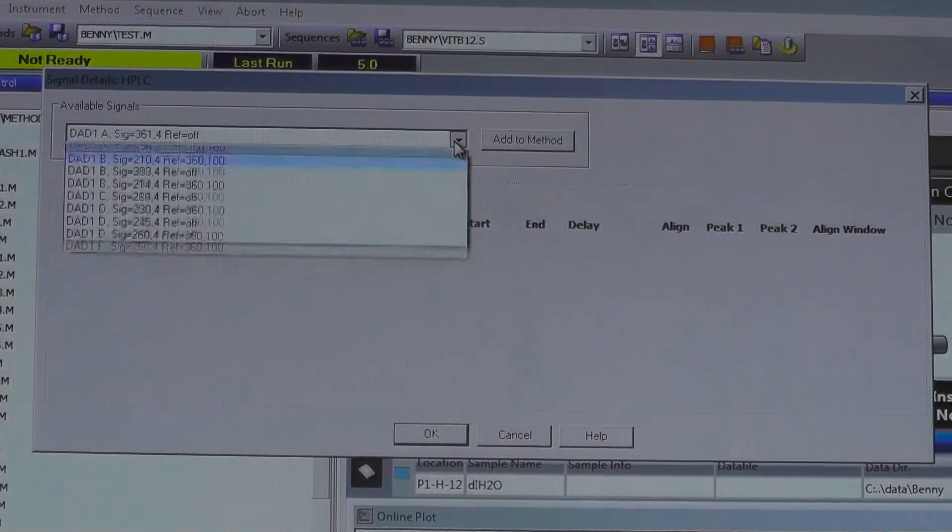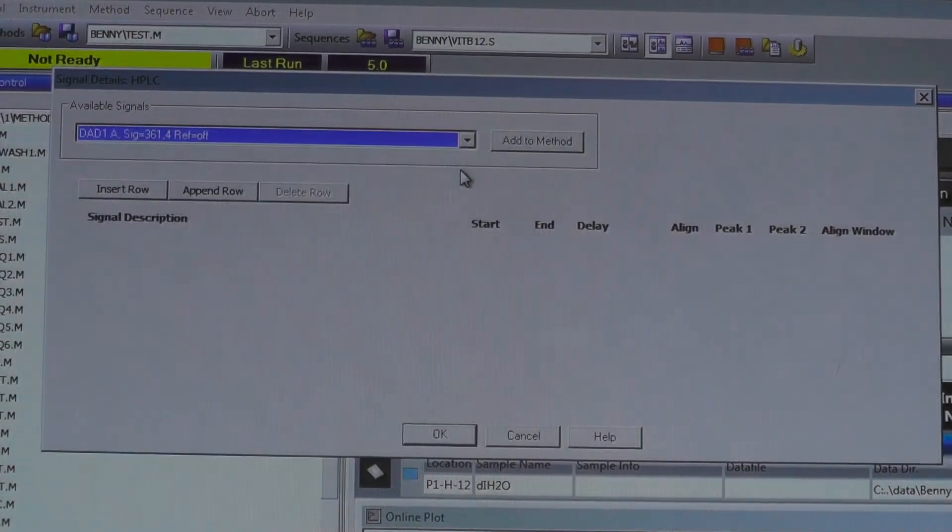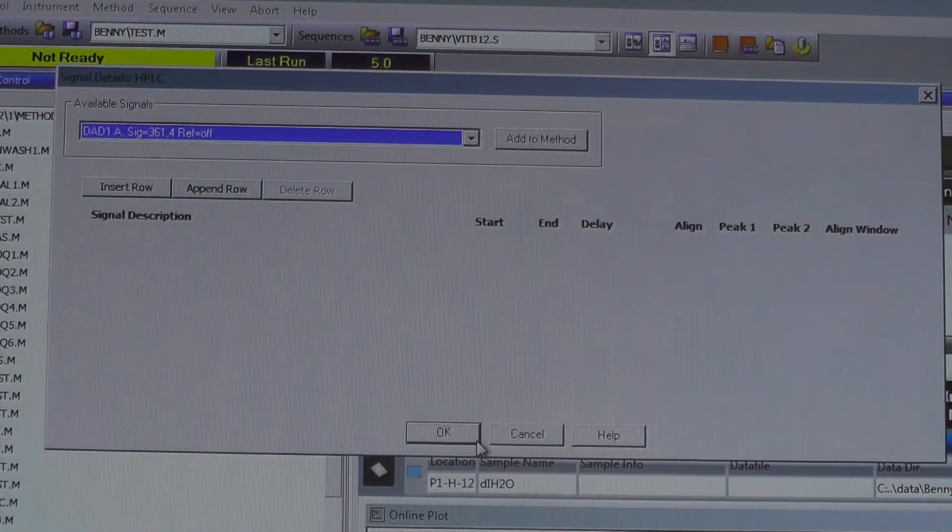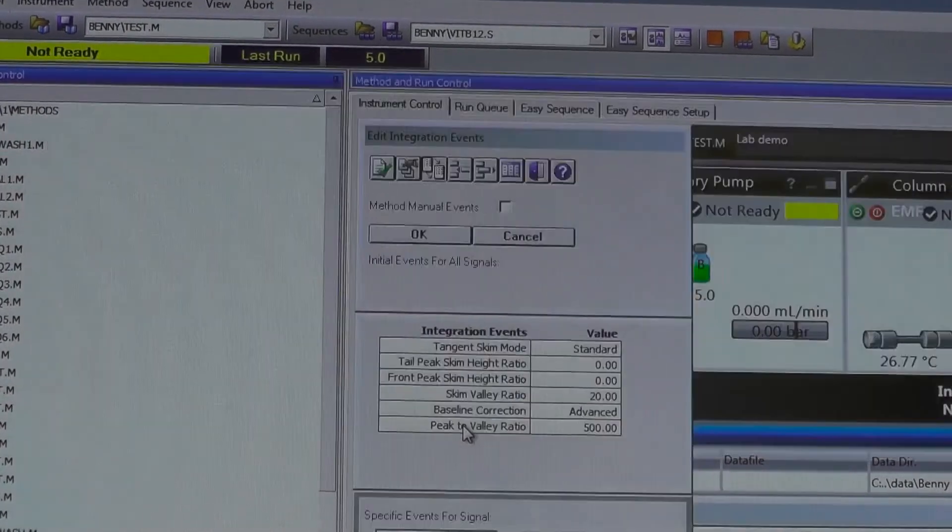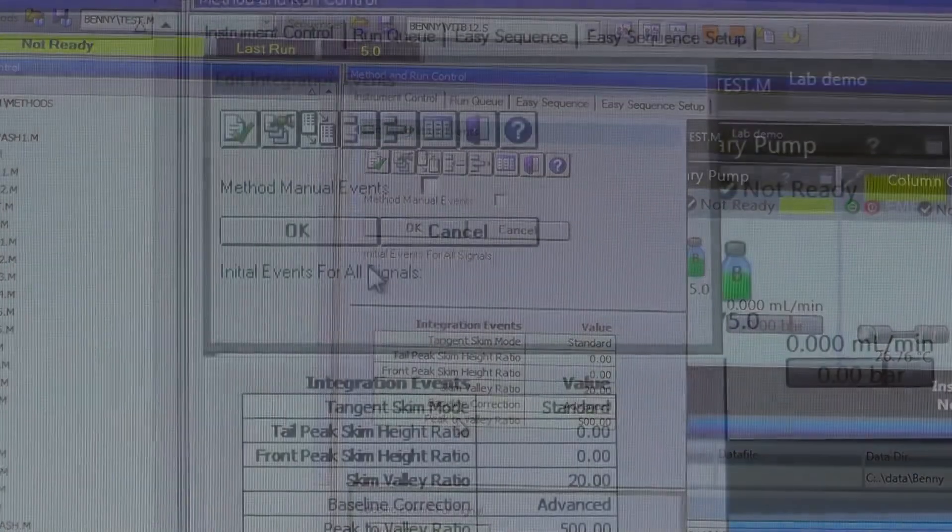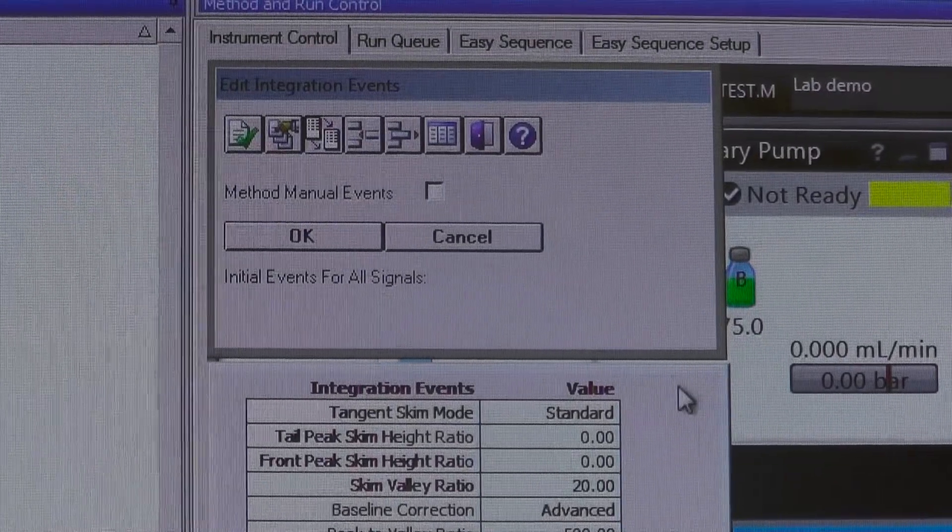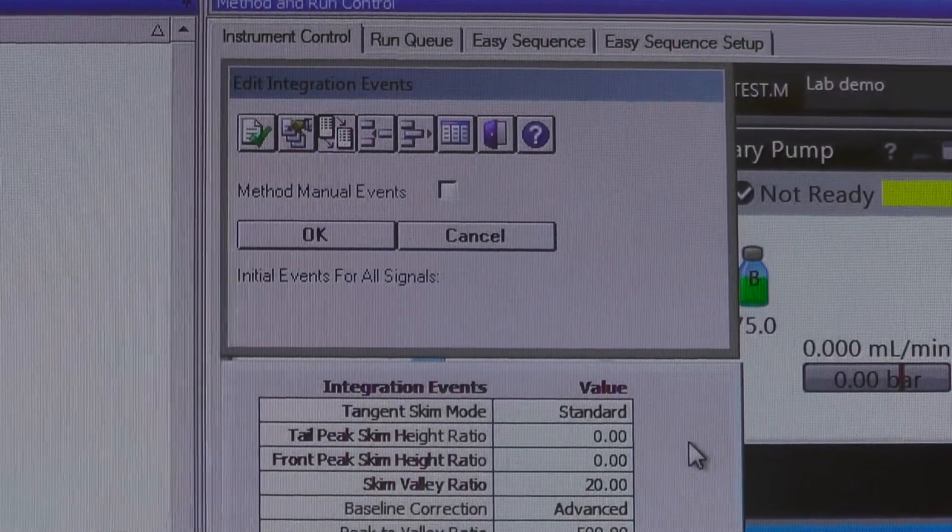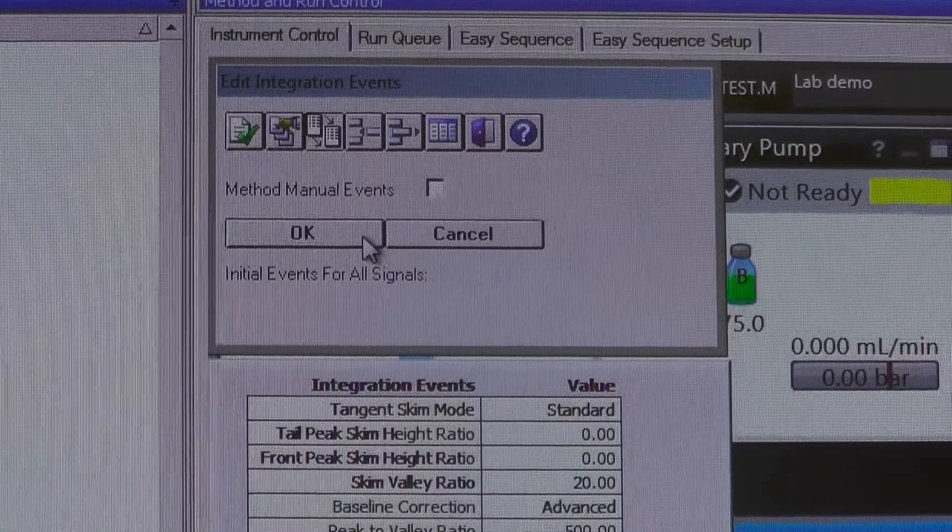Next, a Signal Details window will pop up. You can change the signal settings according to your needs. Click OK to continue. Then, an Edit Integration Event window will appear. Do not change these settings. Click OK.